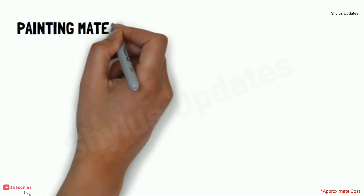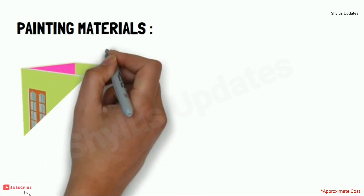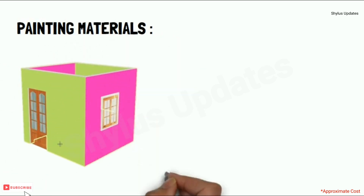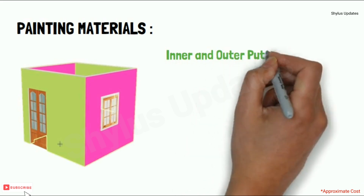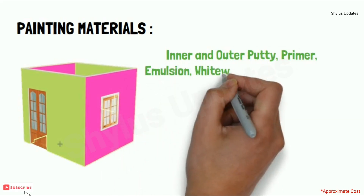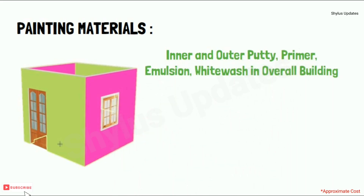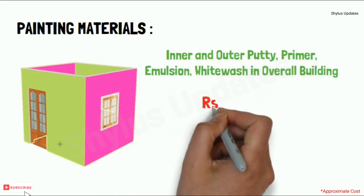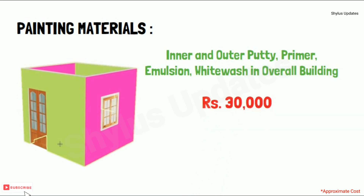Painting materials for inner and outer putty, primer, emulsion, and whitewash for the overall building — the cost would be rupees 30,000.